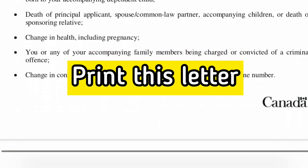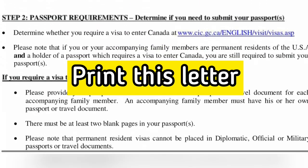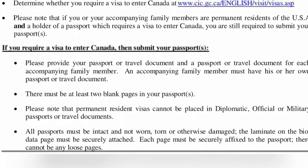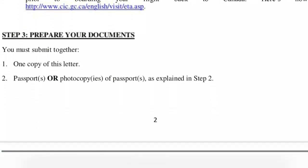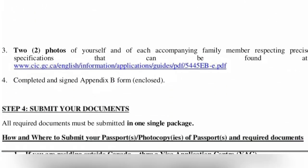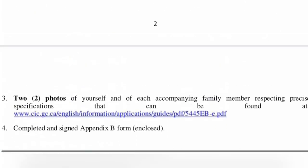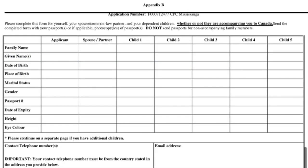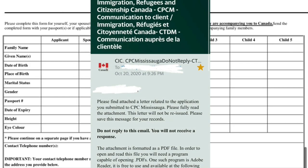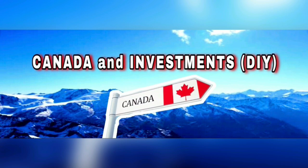If you scroll down, all requirements are listed there, so you don't have to worry. All you really have to do is print a copy of this letter, your original passport, two PR photos — I'll show you the measurements later — and one of the important things is Appendix B, which you also have to fill in.